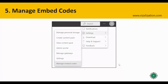Now let's learn how to manage embed codes. In Power BI service, click the three dots, select Settings, and then select Manage Embed Codes. We'll look at this in more detail during the case study.